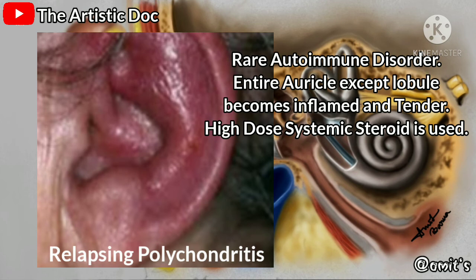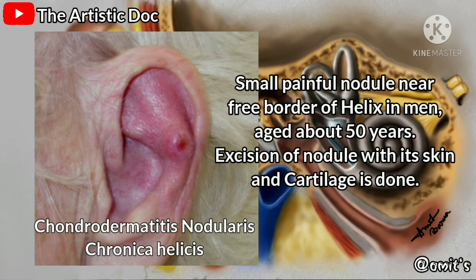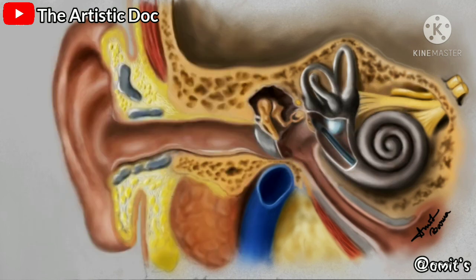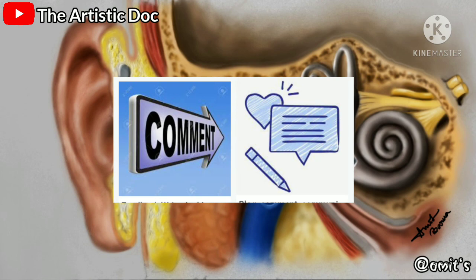Relapsing polychondritis is a rare autoimmune disorder involving the cartilage; the pinna except the lobule becomes tender and inflamed. Management involves high-dose systemic steroids. Chondrodermatitis nodularis chronica helicis presents as a small painful nodule at the border of the helix in men, occurring around age 50; nodular excision with its skin and cartilage is the treatment. The tumors of the pinna will be discussed in subsequent videos.